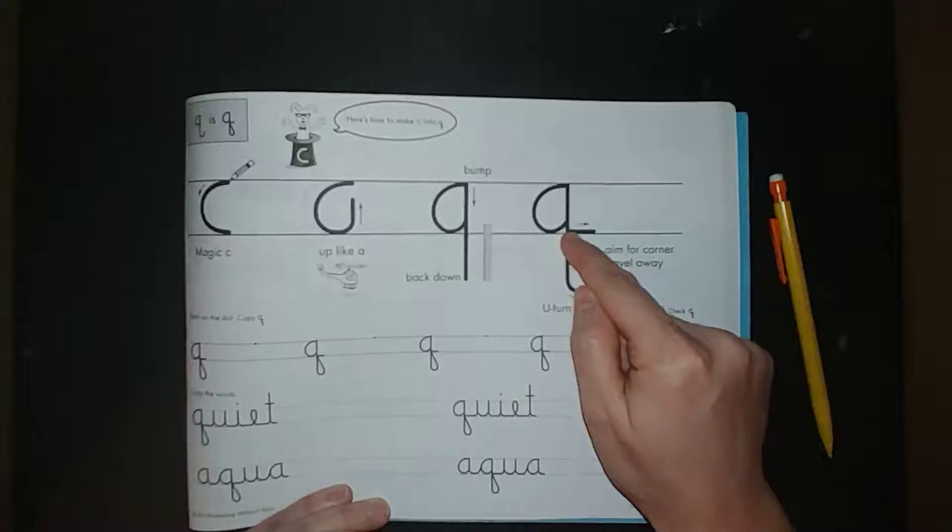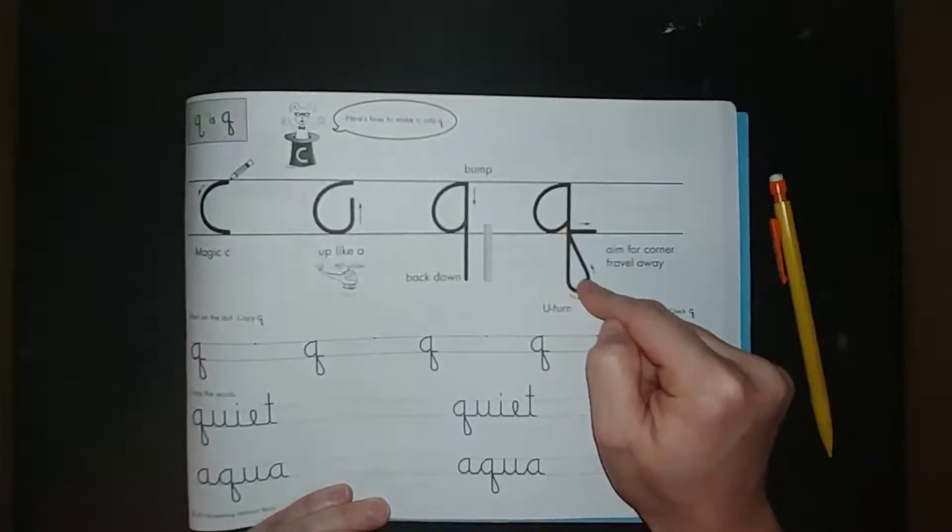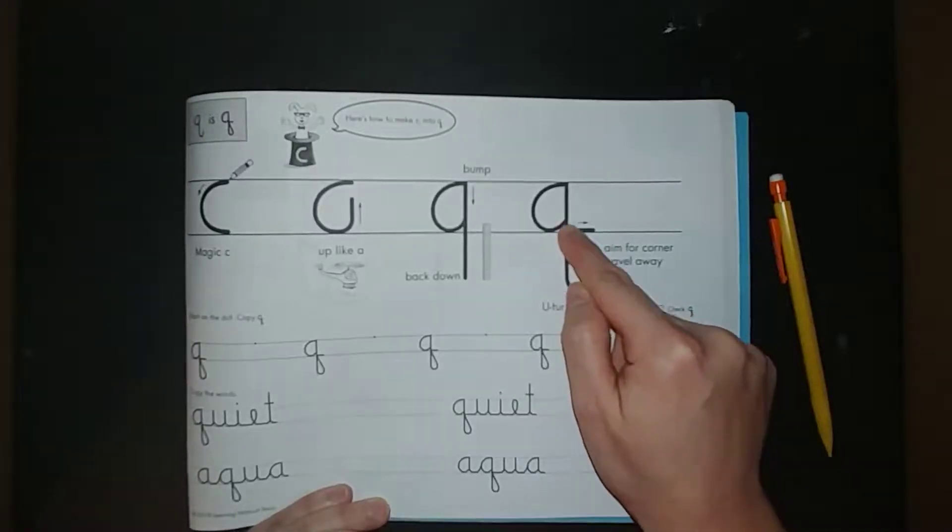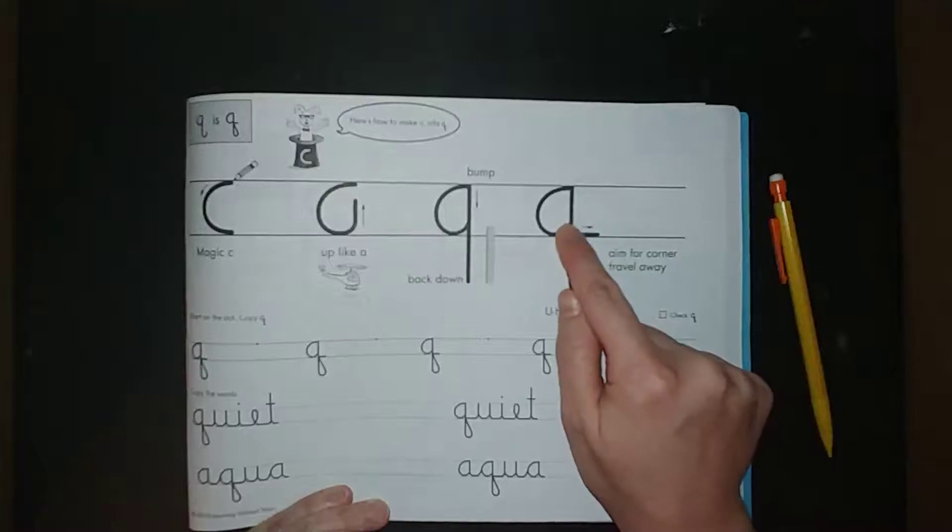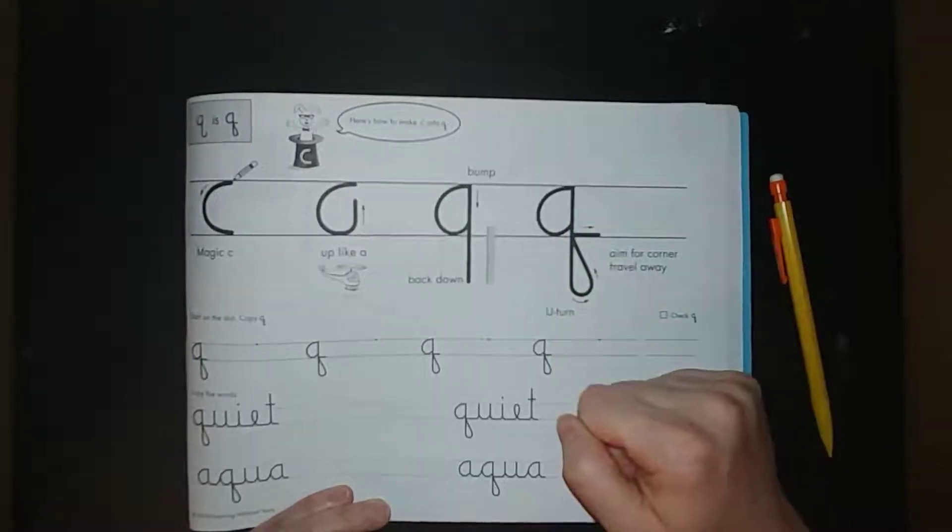So don't go this way. You've got to make sure you're going this direction. It says aim for the corner. So here's the corner right here. Go this way, aim for that corner, and then you're going to travel away this way.